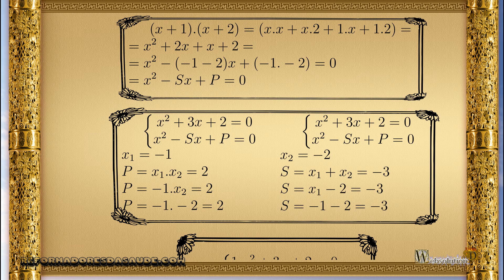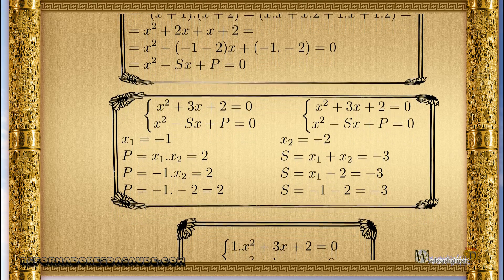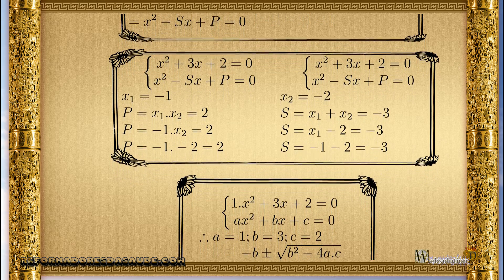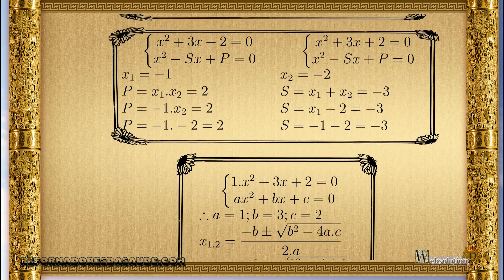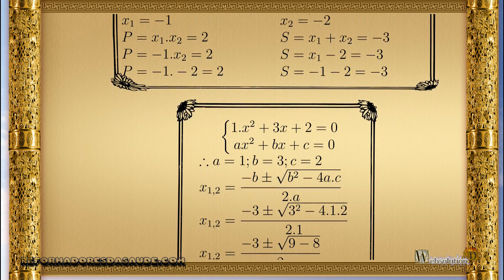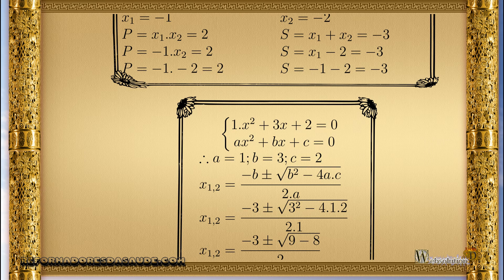Now we begin the analysis of the Bhaskara formula. The first step is to identify the coefficients — the numbers that multiply the variables plus the constant. So coefficient a equals 1, b equals 3, and c equals 2. This is the basic rule to apply the Bhaskara formula.